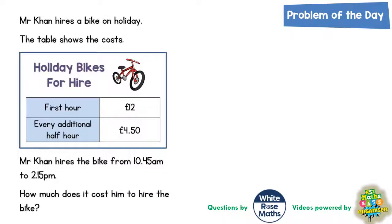Welcome, problem solving fans, for another problem of the day. This one's all about hiring bikes on holiday, which I'm sure a lot of you have actually done in the past. Mr. Kahn hires a bike on holiday. The table shows the costs: Holiday Bikes for Hire. The first hour is £12 and every additional half hour is £4.50. Mr. Kahn hires the bike from 10.45am till 2.15pm. How much does it cost him to hire the bike?